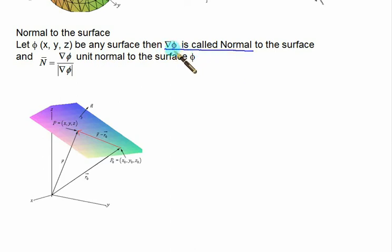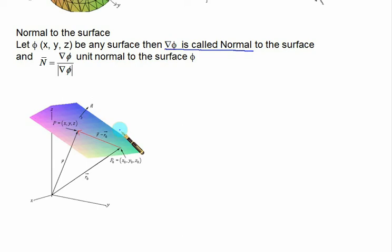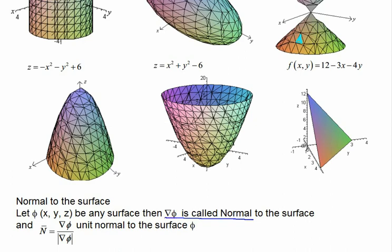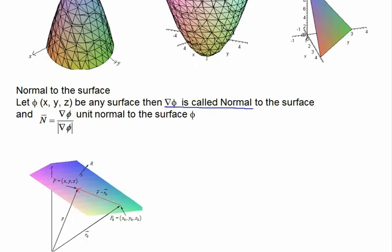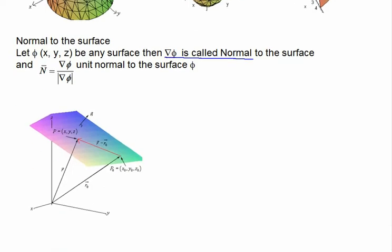The grad (del operator) is defined as i(∂/∂x) + j(∂/∂y) + k(∂/∂z). For any surface, the outward normal can be obtained as grad phi divided by the magnitude of grad phi. We have a variety of functions here, and we'll try out the normal to these surfaces.